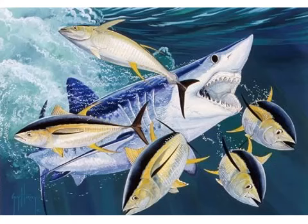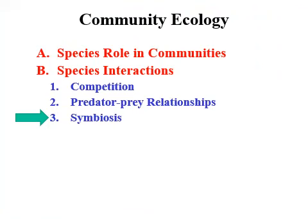You get the idea — there are some fantastic, very interesting predator-prey relationships out there. That concludes the last part of predator-prey relationships. Now we're ready to move on to symbiosis, another major type of interaction that takes place amongst species. That is what we're going to look at this week — the week of March 23rd.